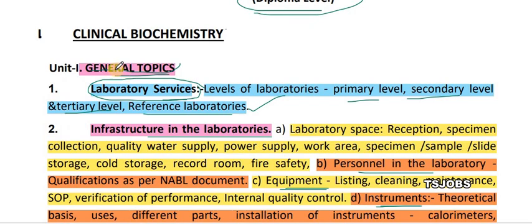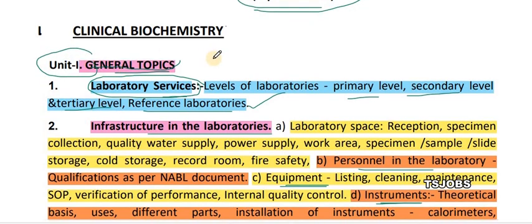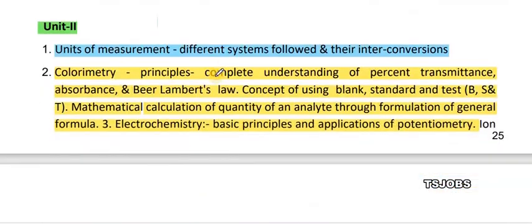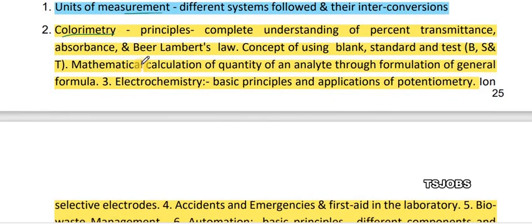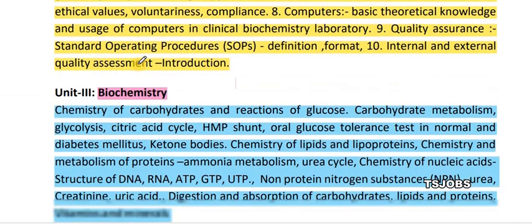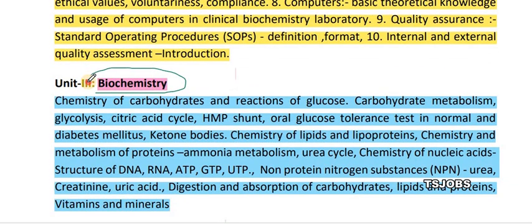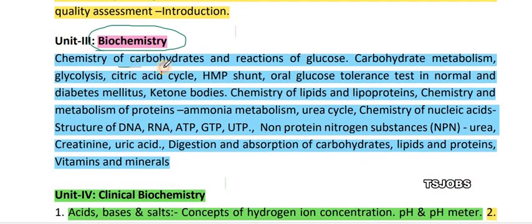Unit 1 is general topics in biochemistry. The second unit is the unit of measurements and the colorimeter concept. Unit 3 is biochemistry: chemistry of carbohydrates, glucose, acids, and oral glucose tolerance. Also covered are DNA, RNA, ATP, GTP, UTP, ammonia metabolism, urea cycle, chemistry of nucleic acids, creatinine, uric acid, digestion, and absorption.